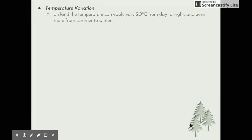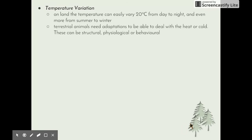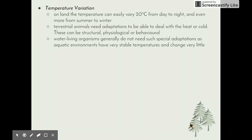Next is temperature variation. On land, temperature can easily vary 20 degrees Celsius from day to night, and even more from summer to winter. Living things must cope with this while maintaining a stable internal body temperature. Terrestrial animals need fur or feathers for insulation, or have physiological responses such as sweating or shivering, or alter behavior by sunbaking or seeking shade. Water-living organisms generally do not need such adaptations, as aquatic environments have very stable temperatures that change little between seasons — water is much harder to heat than air.